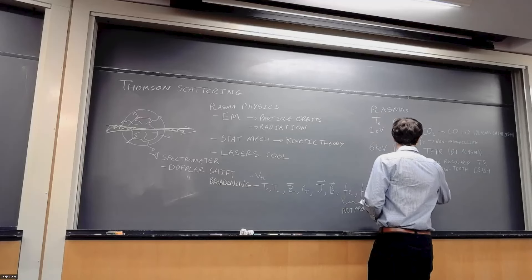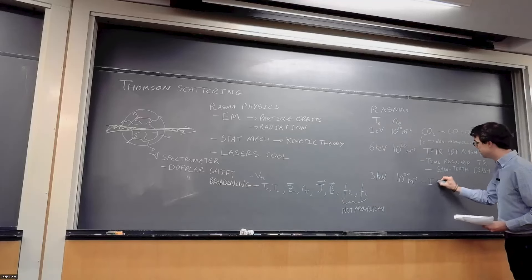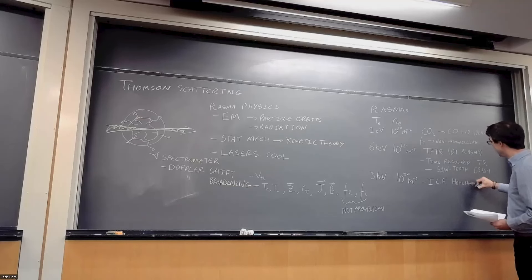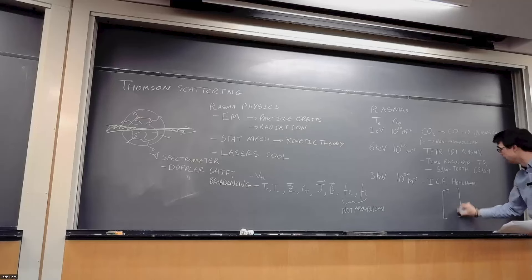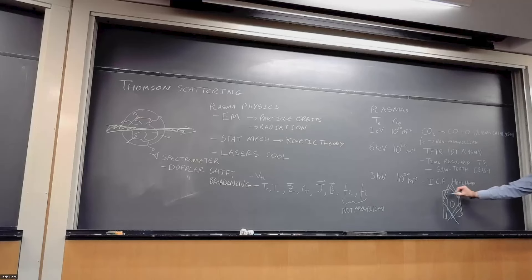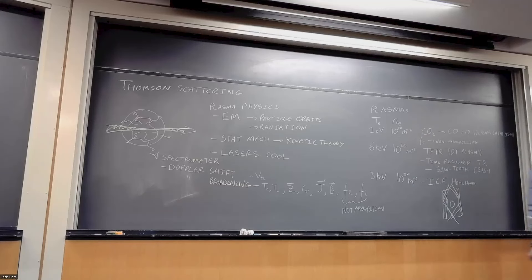We can go to similar temperatures but much higher densities — 10 to the 27 per meter cubed. This is a measurement using Thomson scattering inside an inertial confinement fusion hohlraum, that little gold cylinder that has 192 laser beams hitting inside it to produce an x-ray bath. There's a large amount of plasma on the walls, and folks were able to use Thomson scattering to diagnose the temperature and density there, which is important to know what your x-ray flux is going to be onto the capsule. That's 10 orders of magnitude in density, but fundamentally the same technique.